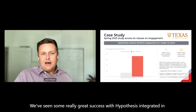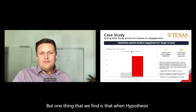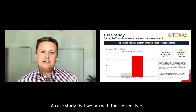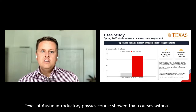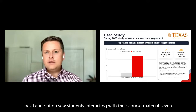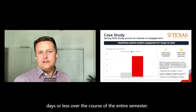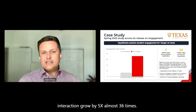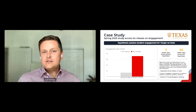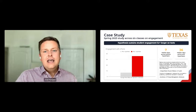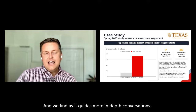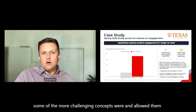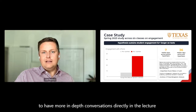We've seen great success with Hypothesis in a variety of courses. When Hypothesis is deployed, students don't just read — they read more regularly. A case study at the University of Texas at Austin in an introductory physics course showed that without social annotation, students interacted with course material seven days or less over an entire semester. Once social annotation was added, interaction grew by nearly 5x — almost 36 times over a 15-week course, translating to three or four times a week. Faculty feedback was that students were more prepared and could have more in-depth conversations in lecture.